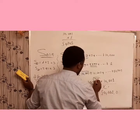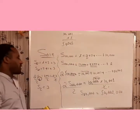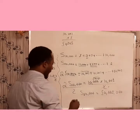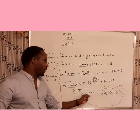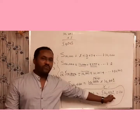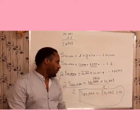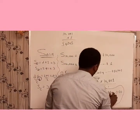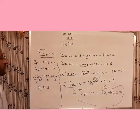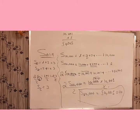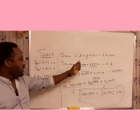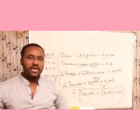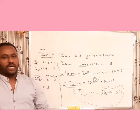The final result is the sum of the first 10,000 natural numbers equals 50,005,000. This is how we find the sum of the first any natural number in general. Based on this technique you can find the sum of the first any natural number in general.